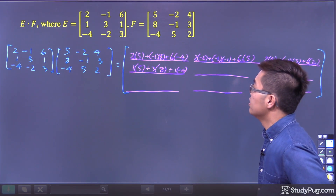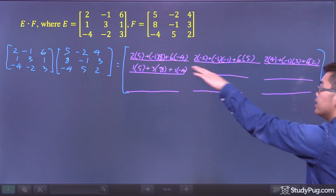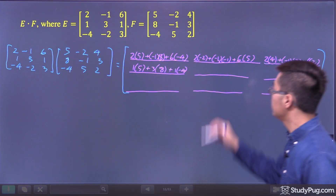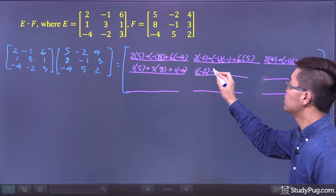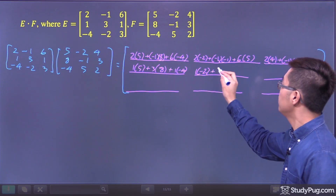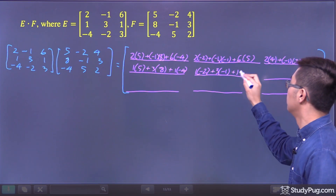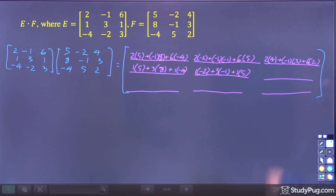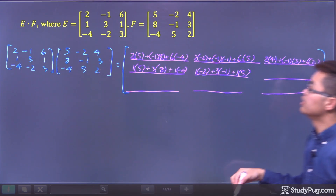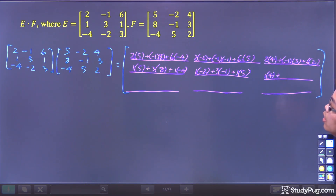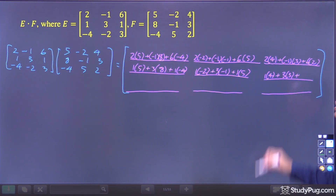The next entry is in the second row and second column, so take the dot product of the second row and second column. That gives us: 1 times negative 2, plus 3 times negative 1, plus 1 times 5. Then the entry in the second row and third column gives us: 1 times 4, plus 3 times 3, plus 1 times 2.